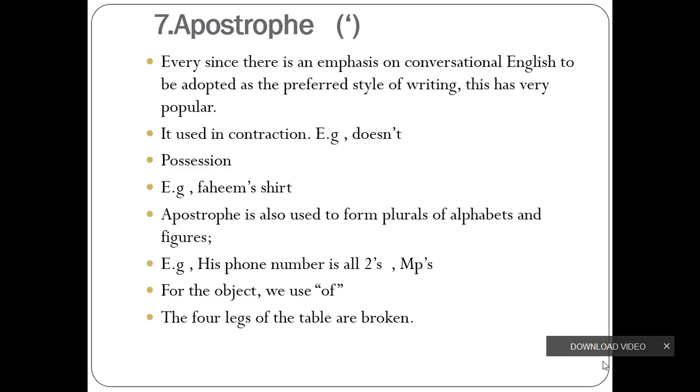Apostrophe. Apostrophe used for possession. For example, John's shirt. And lot of examples are there. Authors used for object. The forelegs of the table are broken.